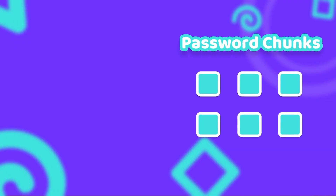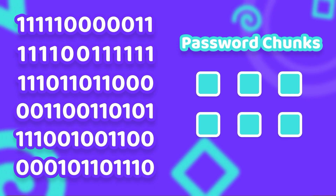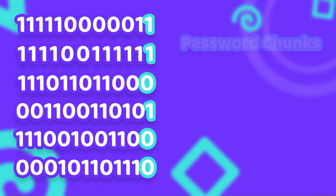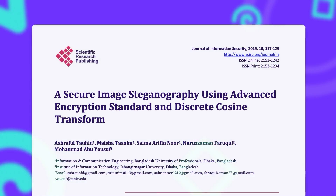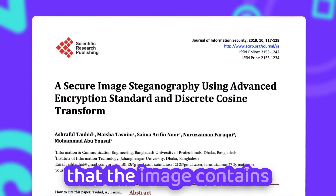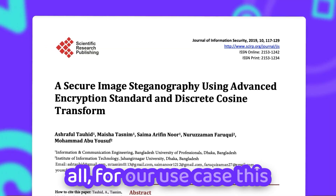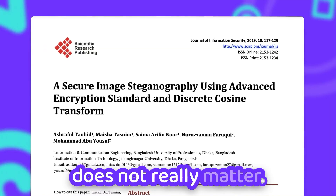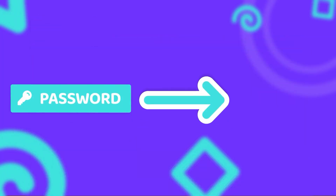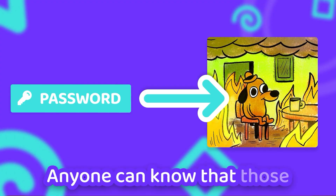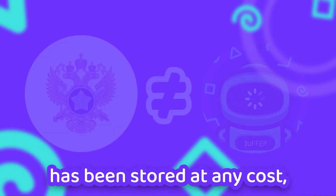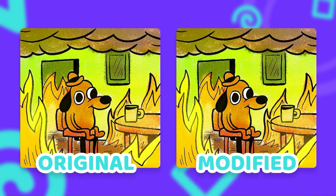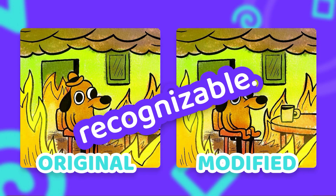All that is left to do is to take our small password chunks that we created earlier and store them into those far right bits, also known as least significant bits, of our pixels. While there are more advanced methods to store data in an image that make it harder to detect that the image contains any hidden message at all, for our use case this does not really matter. As long as the passwords themselves are stored securely in the image, anyone can know that those are our password files. Unlike the Russian intelligence service, we do not actually need to hide the fact that information has been stored at any cost, as long as it doesn't alter our image in any weird way and our meme is still recognizable.